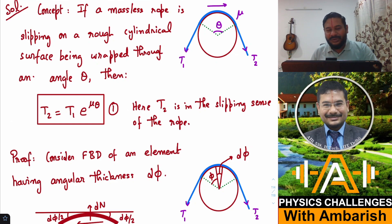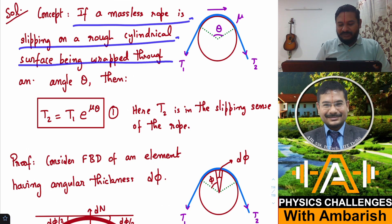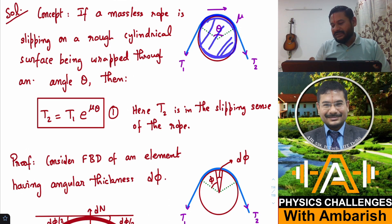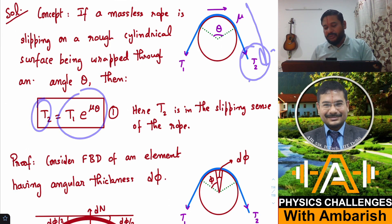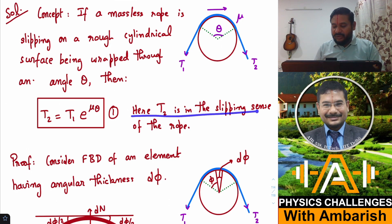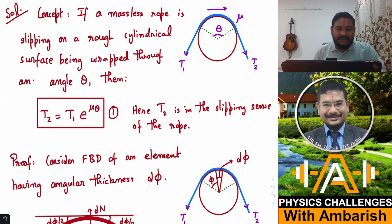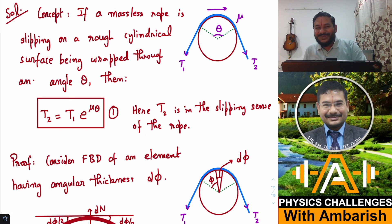The first thing I present to you is a very important concept. If a massless rope is slipping on a rough cylindrical surface being wrapped through an angle theta, then if this side the tension is T2 and the rope is slipping in this direction, then T2 = T1 * e^(mu*theta), where theta is the angle of wrap. Here T2 is in the slipping sense of the rope.